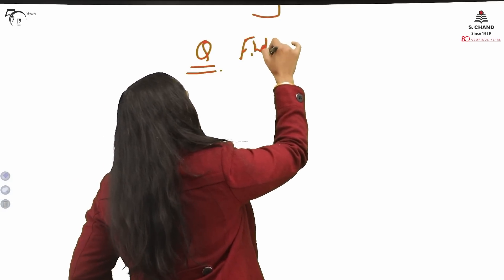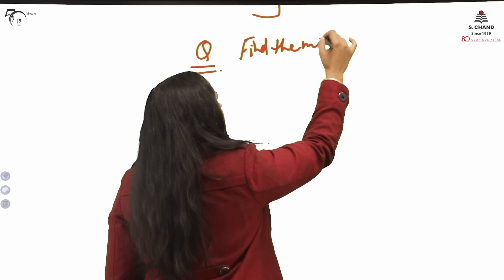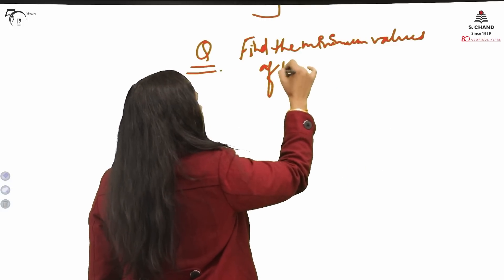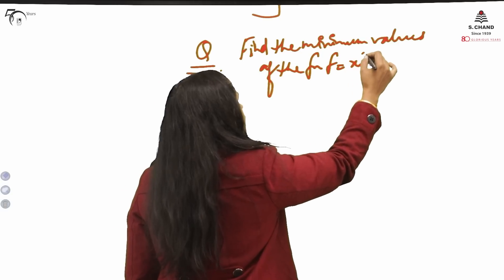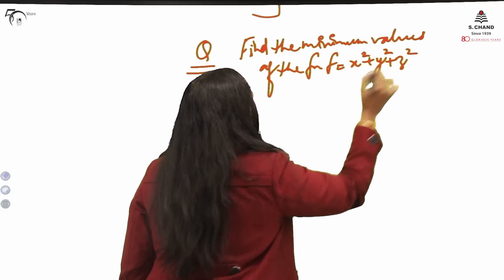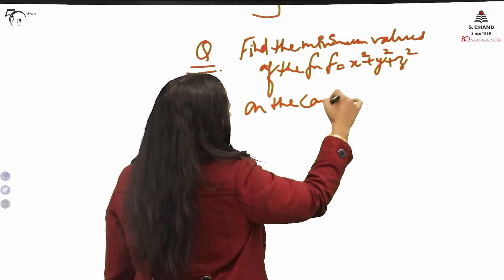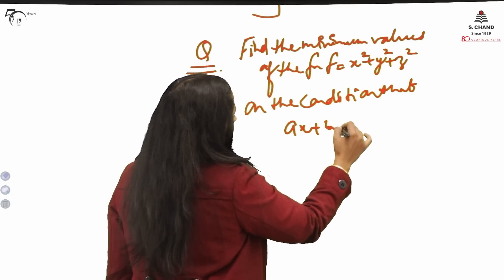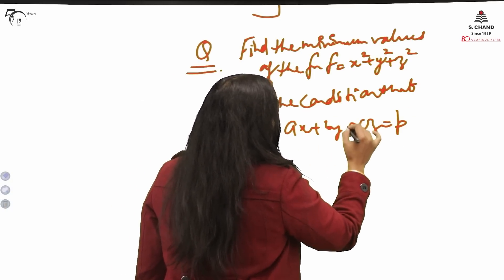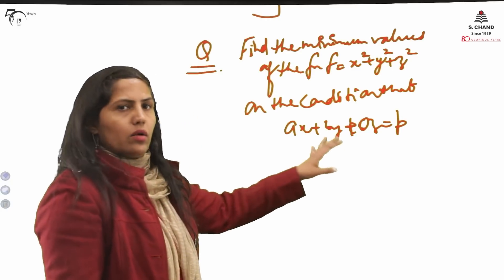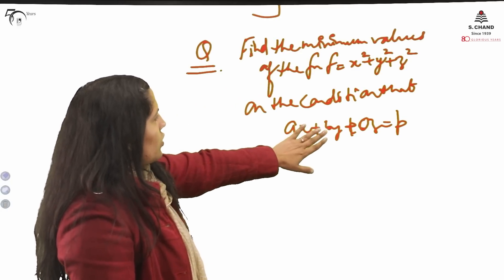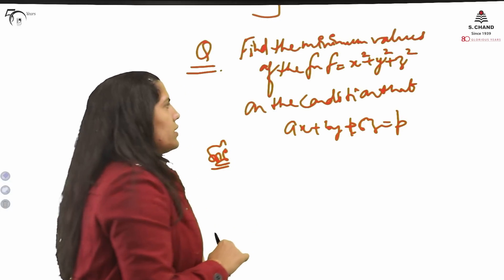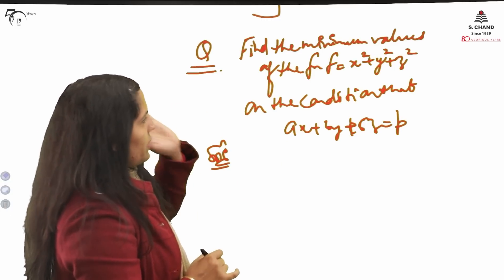I am just taking one question to explain the Lagrange multiplier method. The question is: find the minimum value of the function f = x² + y² + z², on the condition that Ax + By + Cz = P, where A, B, C and P are constants. You have to minimize the function on the condition of this constraint. It means one function is given and one condition — so Lagrange method of multipliers will be used.